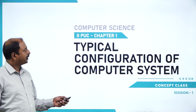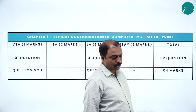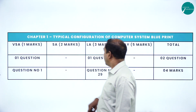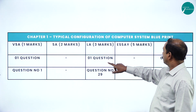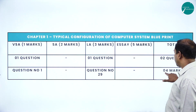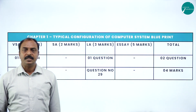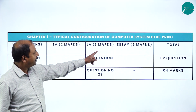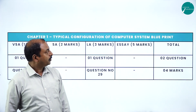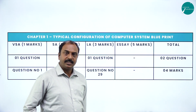Chapter 1: Typical Configuration of Computer System. Now let us look at the weightage of the chapter. There is one MCQ — that is multiple choice question — and one 3-marks question. So totally there are 2 questions, and the total weightage is 4 marks.